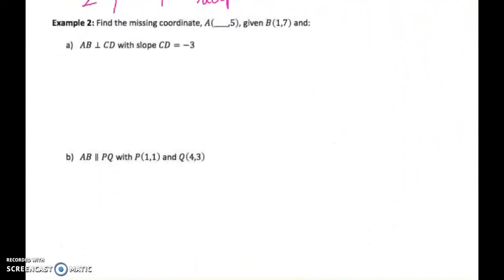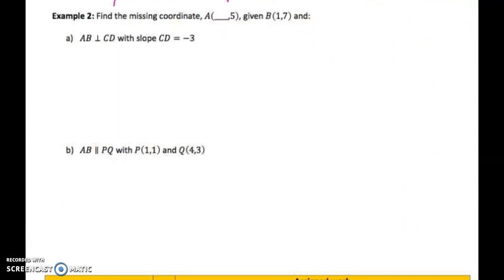Moving on. Example 2, it says, find the missing coordinate for point A, given that we don't know the X coordinate, but we know the Y coordinate of 5, and we know that B has a coordinate of 1, 7. If we want to make AB perpendicular to CD, and CD has a slope of negative 3. Well, the first thing we want to do is to say, okay, what does the slope of AB need to equal? So the slope of segment AB, if CD equals negative 3, then remember I have to do negative 3 times the slope of AB.